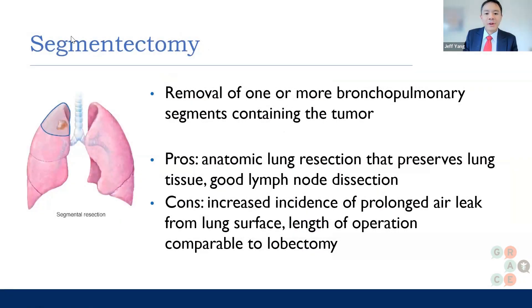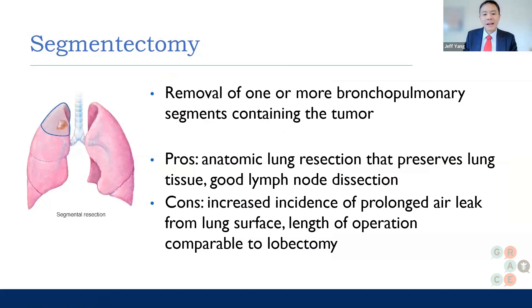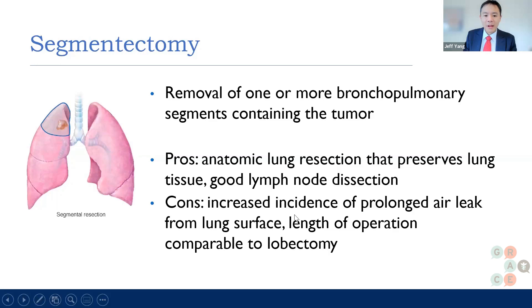For a segmentectomy, you remove one or more bronchopulmonary segments — the small compartments that comprise a lobe. The advantages of a segmentectomy are that it preserves lung tissue and offers a good lymph node dissection; you can take more lymph nodes. The disadvantage is that there is a slightly increased risk of prolonged air